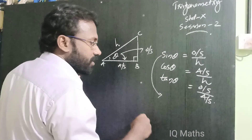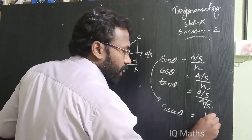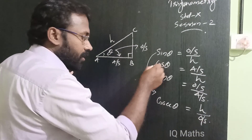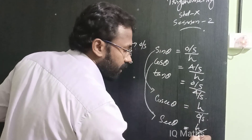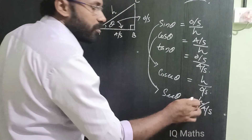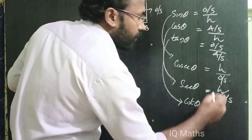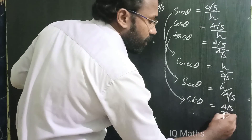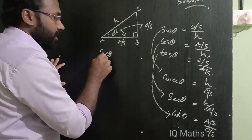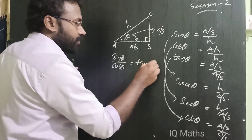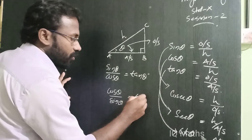The reciprocal of sin theta is cosec theta, equal to hypotenuse by opposite side. The reciprocal of cos theta is sec theta, equal to hypotenuse by adjacent side. The reciprocal of tan theta is cot theta, equal to adjacent side by opposite side.